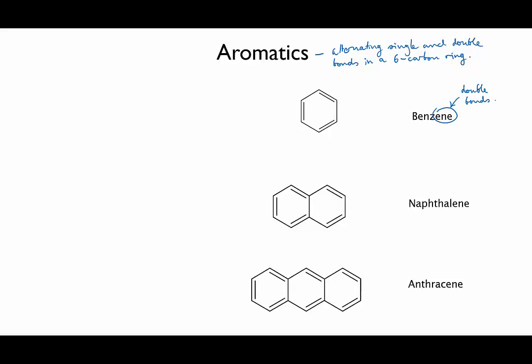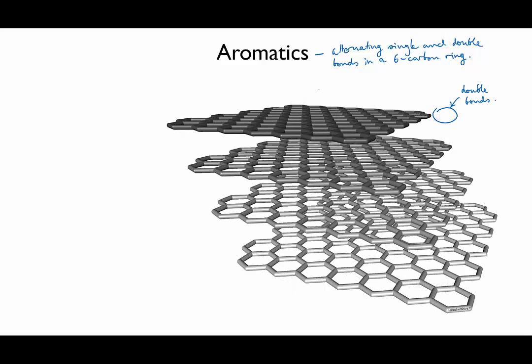If benzene rings are joined onto each other indefinitely, you eventually end up with a 2D sheet of carbon hexagons. Now, where have you heard of that before? Ah yes, it's graphene, which is the layers that are stacked together to make graphite.